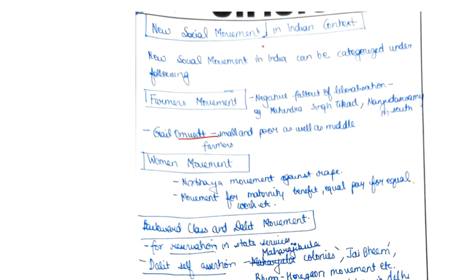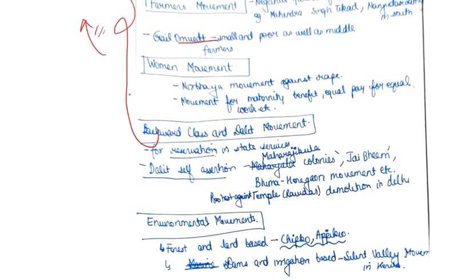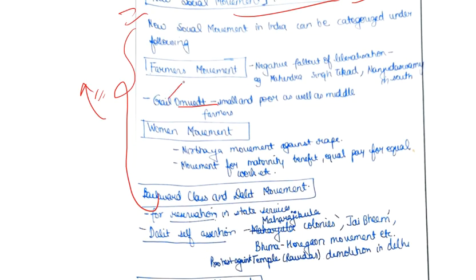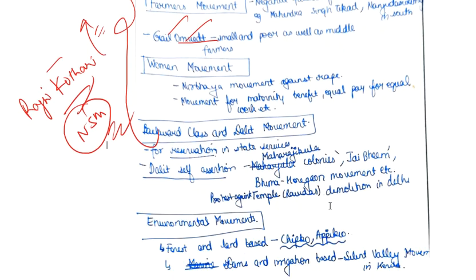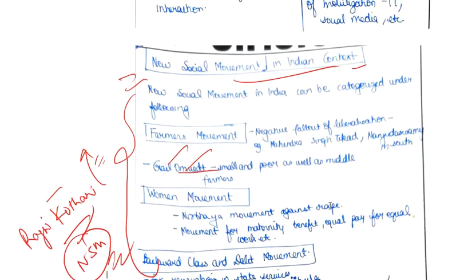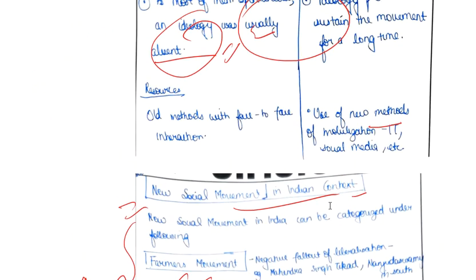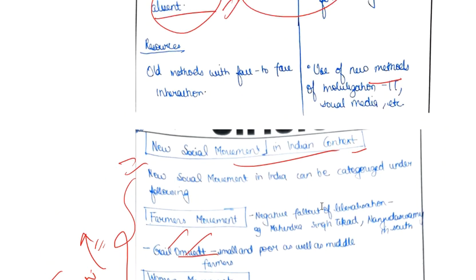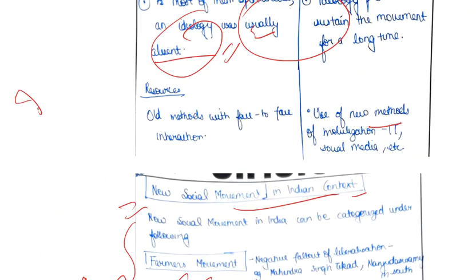You have made a separate section for new social movement in the Indian context — you can incorporate those points into the structuring we discussed. You have quoted Gail Omvedt, which is very good, but also do quote Rajini Kothari, who has done extensive work on new social movements. Specifically quoting her views will help you add significant value to this answer.